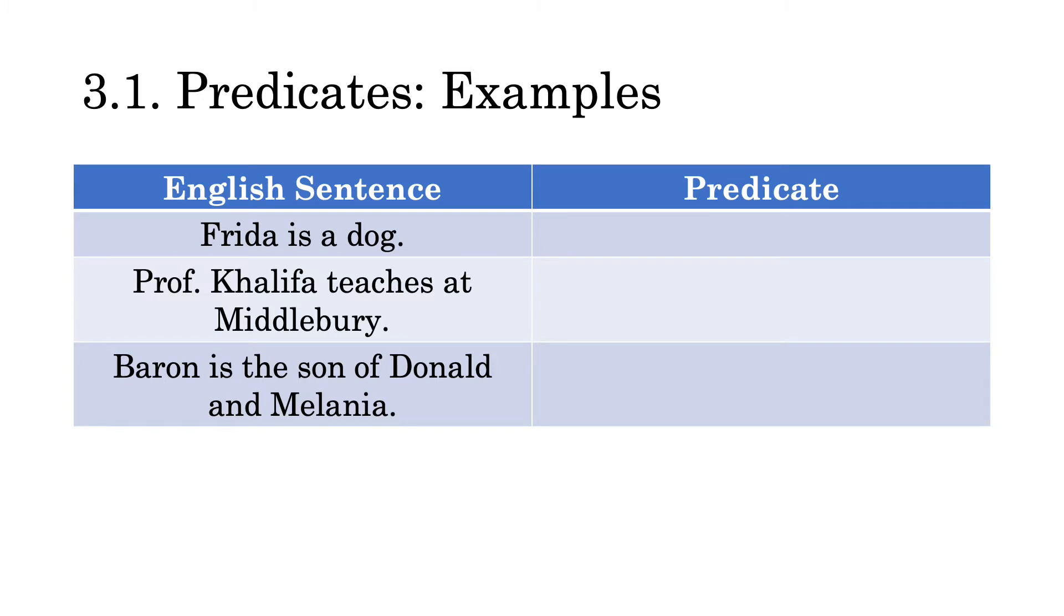Roughly speaking, a predicate is what happens when you take all the individual constants out of a sentence. It's what's left over as a result. So let's take a look at these three sentences and pull out the predicate from each of them.